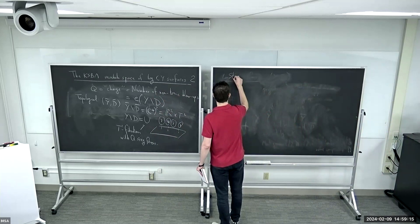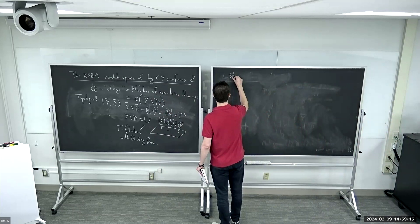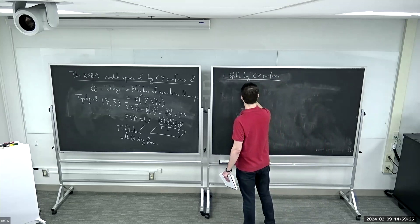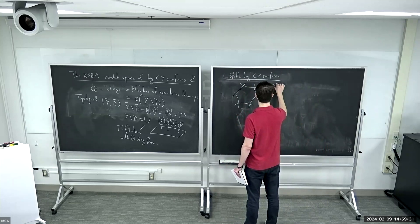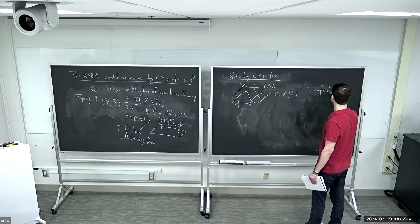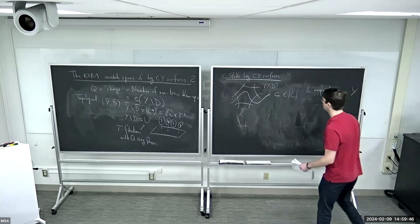So this is what log Calabi-Yau surfaces are. And stable log Calabi-Yau surfaces — in the same way that stable curves are curves with extra marked points, so an extra divisor — a stable log Calabi-Yau surface is such a log Calabi-Yau surface (Y, D) with an extra divisor C that we take inside some ample linear system L, an ample divisor on Y. So my stable log Calabi-Yau surface is the data of Y, D, and C.